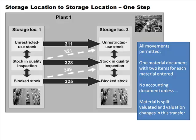Split valuation is a rare occurrence where companies value the same material in two different ways. For example, a material you both make in-house and buy from outside might be valued differently, or material bought from outside might be classified into different grades with different valuations. That is called split valuation.